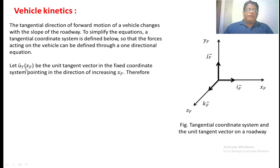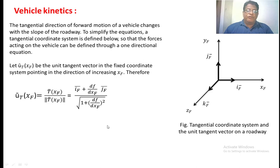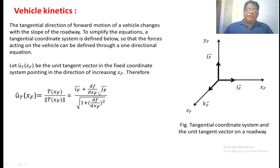The unit tangent vector ut-bar of xf is the tangent vector in the fixed coordinate pointing in the direction of increasing x. Therefore, ut-bar of xf is defined as t-bar of xf divided by the magnitude of t-bar of xf. We already know that t-bar is nothing but the rate of change of the position vector, which was derived in the previous class. In the same manner, the magnitude of the above vector is the unit vector in the direction of tf xf.